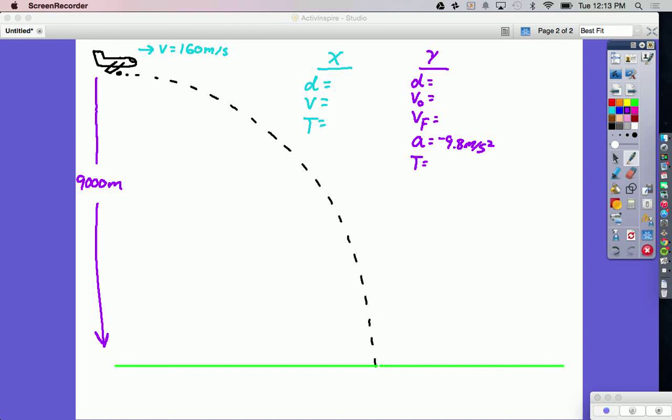A World War II bomber is flying over Japan on a mission. It's going to drop a bomb that's going to fall 9,000 meters until it hits the ground, and it's moving at a speed of 160 meters per second when the bomb is released. So that means that's how fast the bomb is going. We need to know how far before the target should the plane be before it drops the bomb to hit where it wants to have the bomb land.